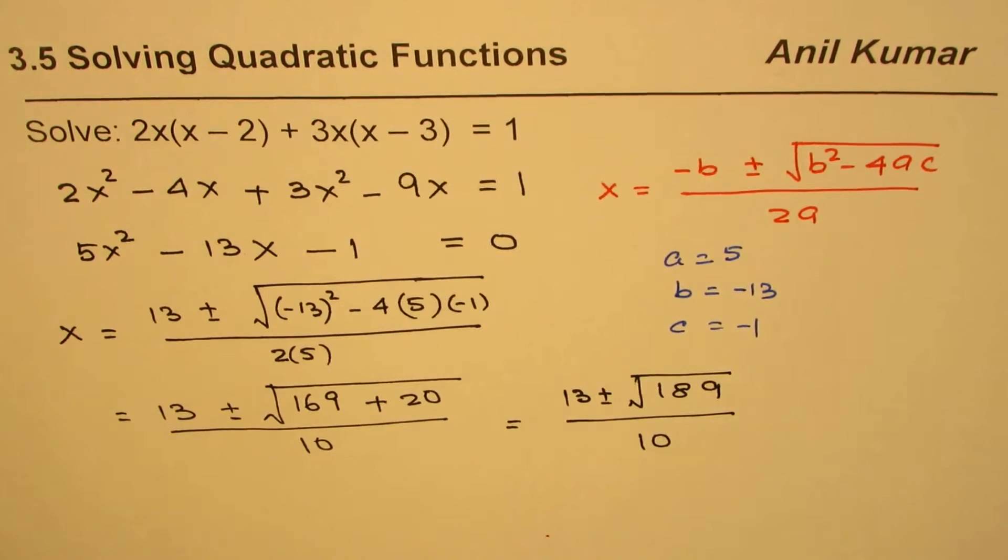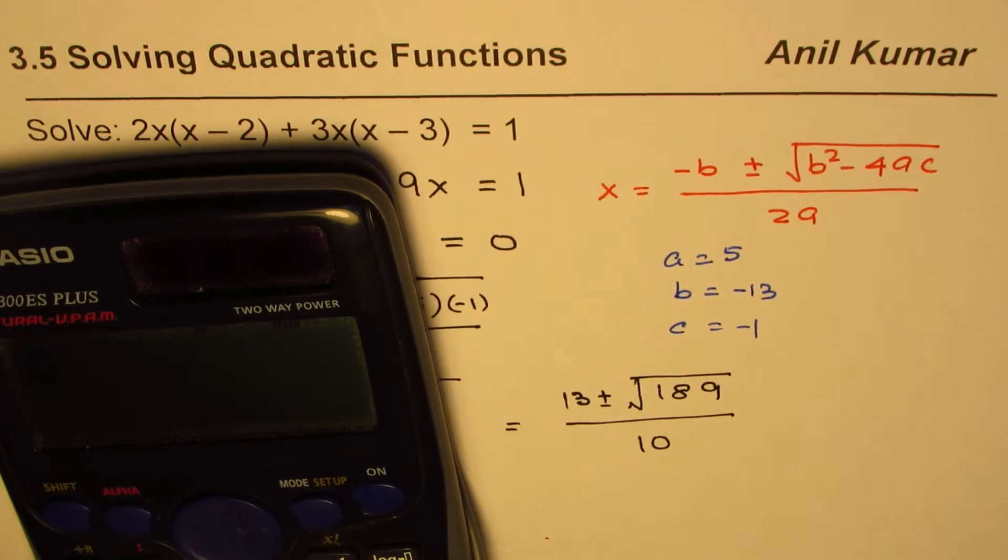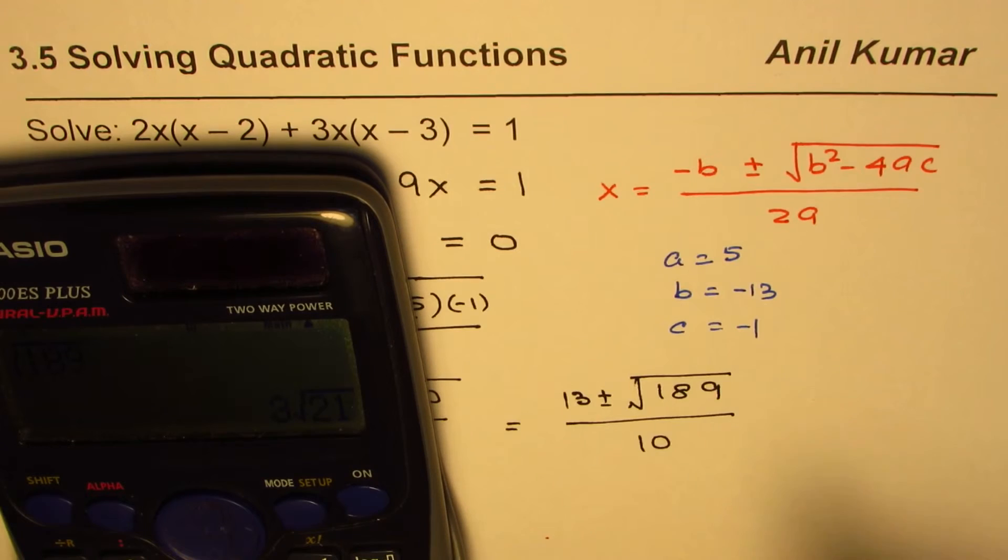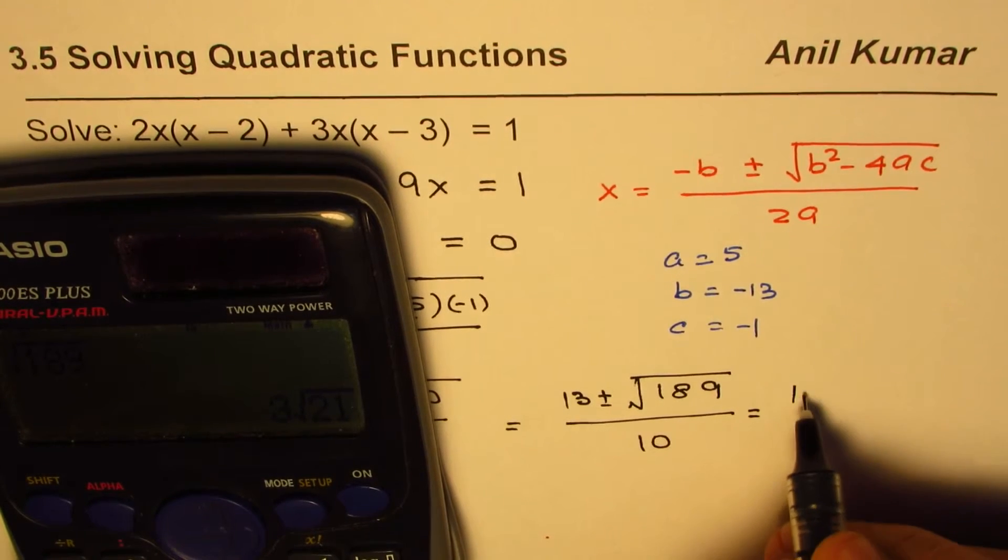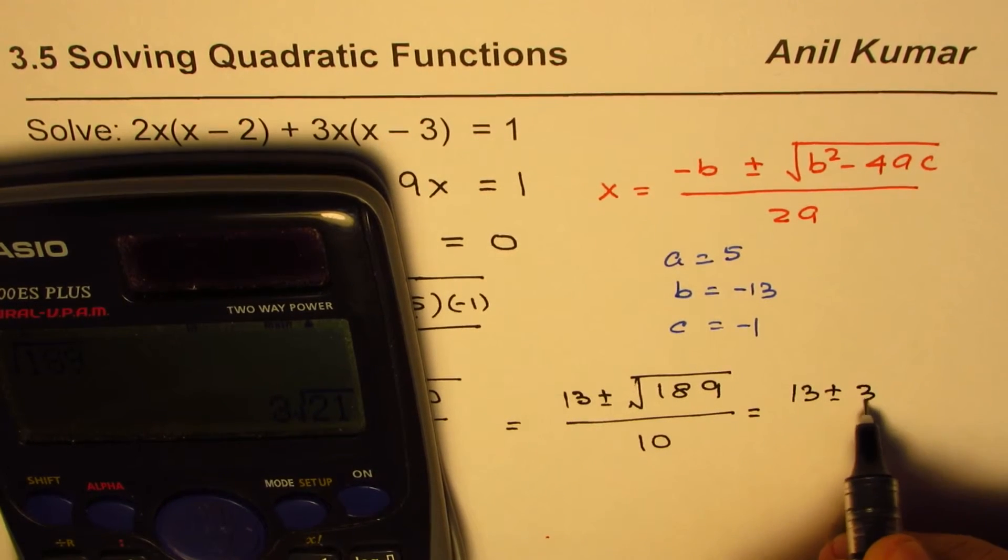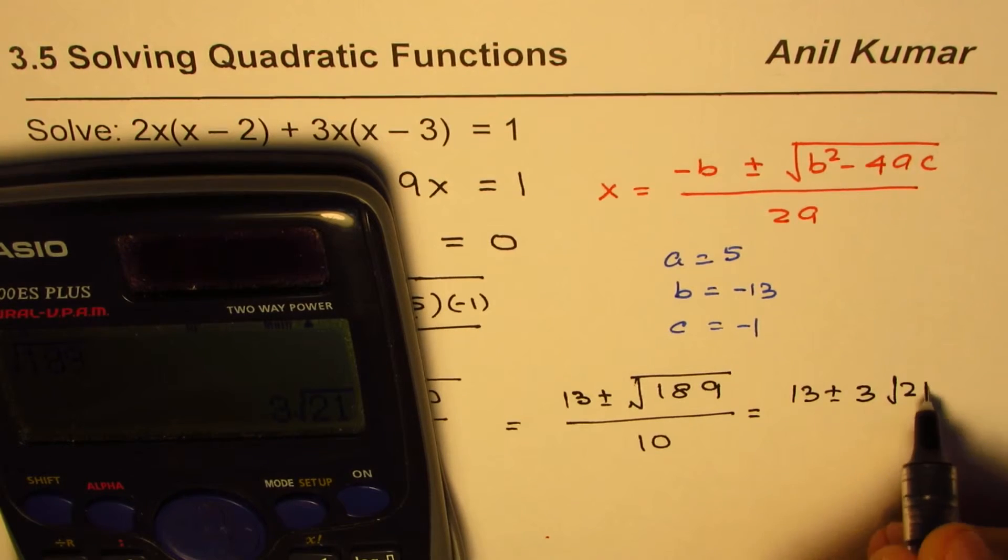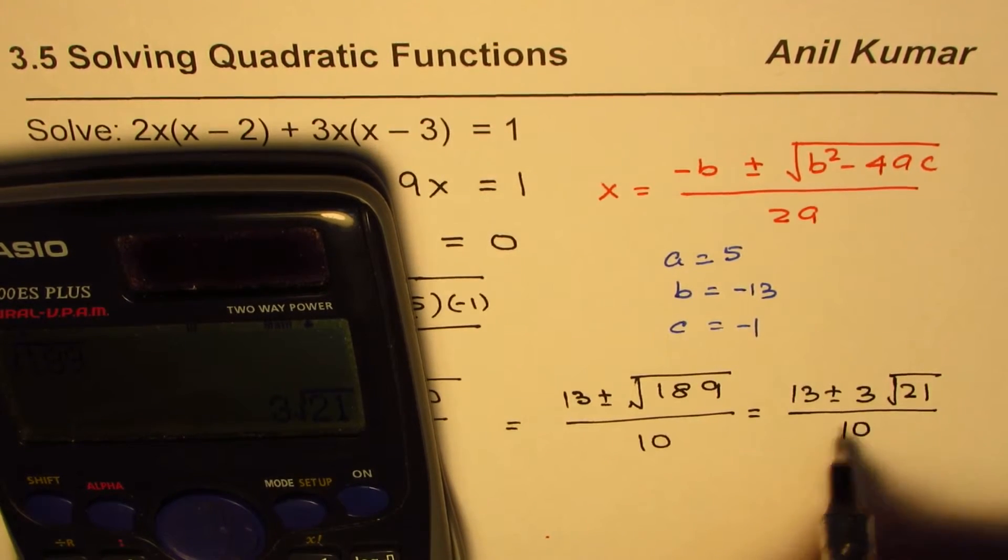You can use the calculator to find square root of 189. So square root of 189 is equal to 3 square root 21. So we could write this as 13 plus or minus 3 square root 21, divided by 10.